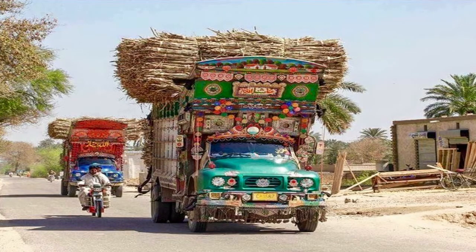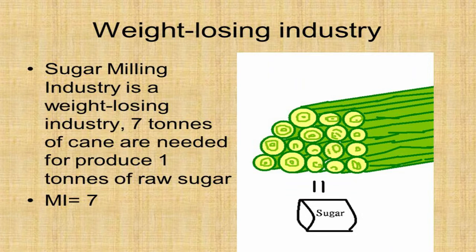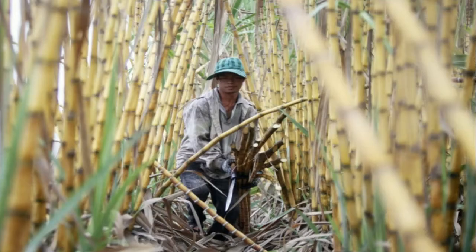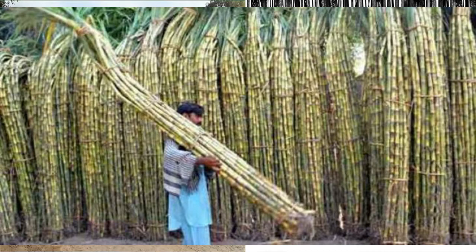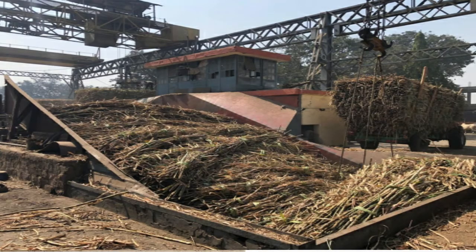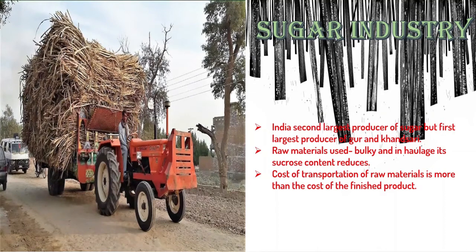As the raw materials are quite bulky, and in transit their sucrose content reduces, this industry is also called a 'weight-losing industry.' Once sugarcane is cut, within 24 hours it must be transported to the mill to extract sugar. The farther the industry is located, the more sucrose content is lost, as the sucrose bonds loosen, reducing the amount of sugar obtained.